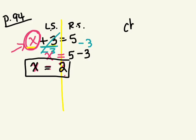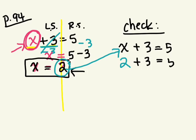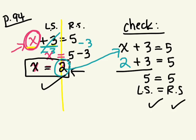We're going to check to see if that makes sense. The original question said something plus 3 is equal to 5. How would I check to see if this is the right answer? I would plug it in — substitute it. I would take this number and plug it in wherever I see the variable. So instead of writing x, I'm going to write 2, because we said x is equal to 2. So: 2 plus 3 equals 5. What's 2 plus 3? 5. So 5 equals 5 — both sides balance. The left side equals the right side. Therefore, that is correct.